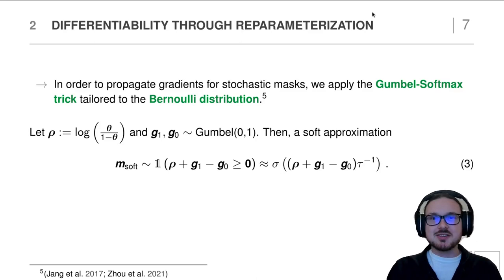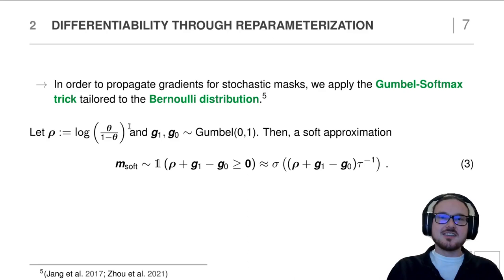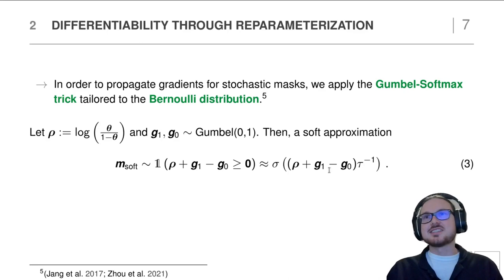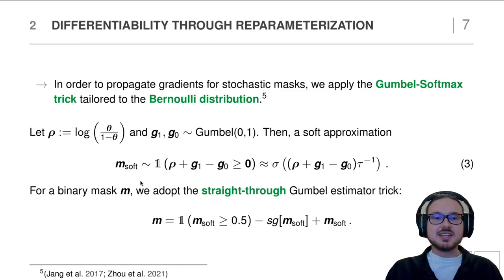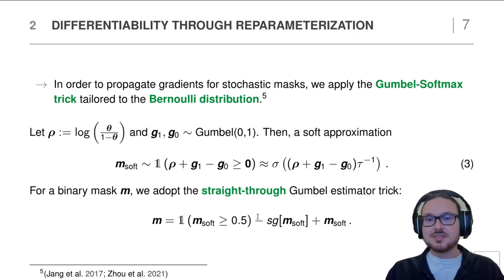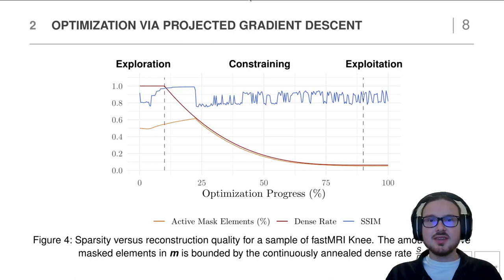A major challenge is that we cannot propagate gradients through our stochastic mask. We apply the Gumbel Softmax trick, tailored to our Bernoulli distribution. This consists of two components: first, thetas are contained in a deterministic node, and stochasticity is created by sampling from a Gumbel distribution. Additionally, the indicator function is approximated via a sigmoid, whose softness is controlled by a temperature parameter. Since we need the binary mask directly, we apply the straight-through trick, which propagates the hard mask obtained via the indicator function while neutralizing the soft mask's impact, allowing gradients to back-propagate through the soft approximation while the hard mask is propagated forward.